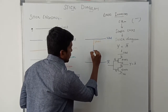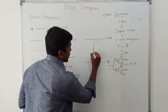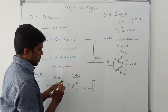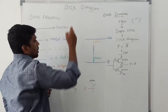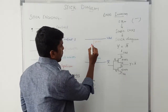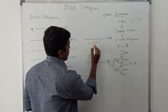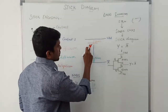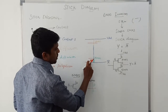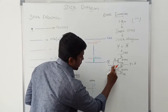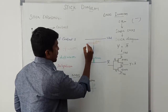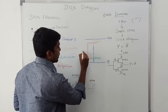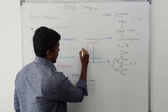We make the contact between PMOS and NMOS. Now we take the poly silicon layer for both PMOS and NMOS — this is the PMOS gate terminal and this one is the NMOS gate terminal. These two terminals are interconnected, and input value A is applied to them.